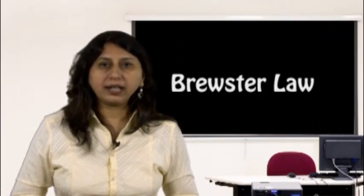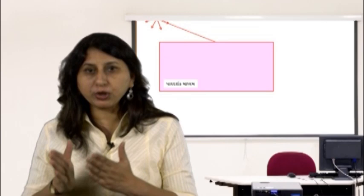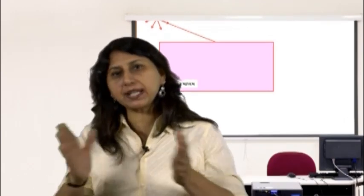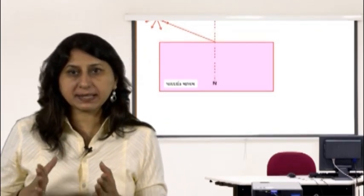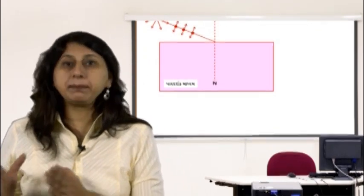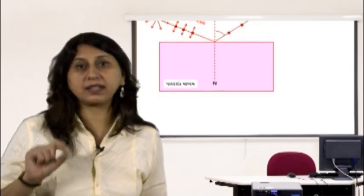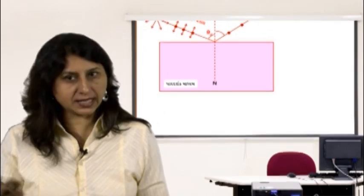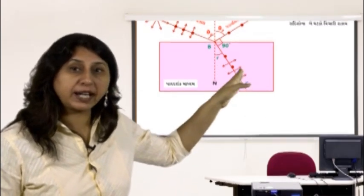Brewster's law: when an unpolarized beam of light is incident at the polarizing angle i on an interface separating a rarer medium from a denser medium of refractive index μ, such that μ = tan i, then the light reflected in the rarer medium is completely polarized. In this condition, the reflected and refracted rays are perpendicular to each other.